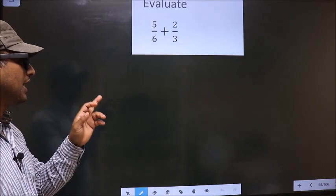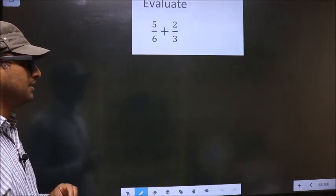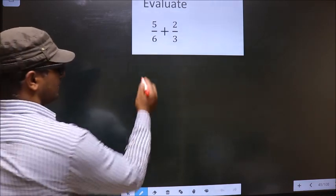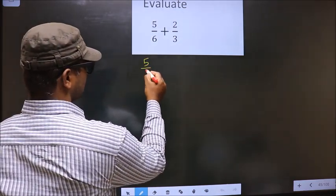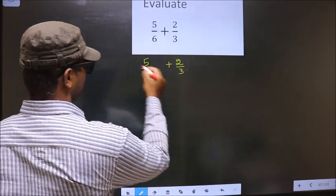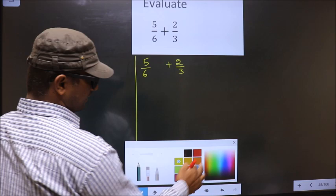Evaluate 5 by 6 plus 2 by 3. First given is 5 by 6 plus 2 by 3.